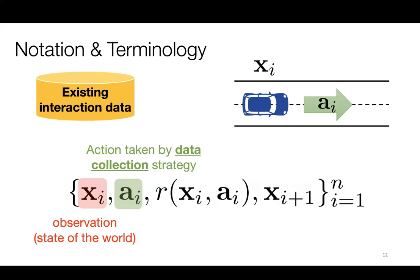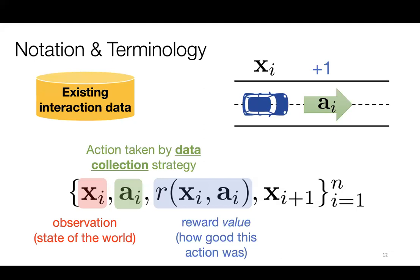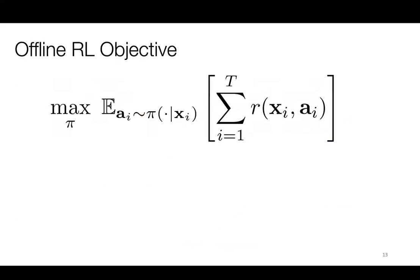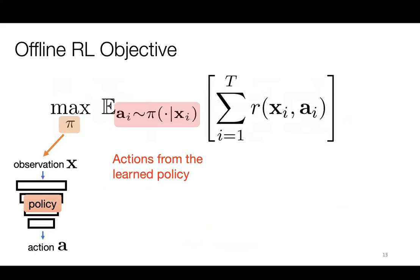We use a_i to denote the action taken by the data collection strategy — for instance, the car moves forward. R(x_i, a_i) is a scalar reward value that tells you how good action a_i was at state x_i. And x_{i+1} is the subsequent state. With this dataset of these four elements, my goal is to solve the standard RL objective: find a policy mapping observations to actions such that using this policy to make a sequence of decisions upon deployment yields high cumulative reward — but now you only have access to the dataset.